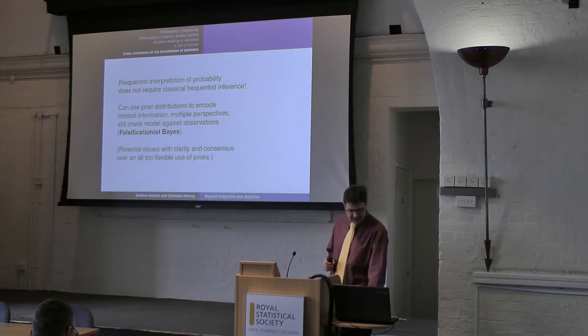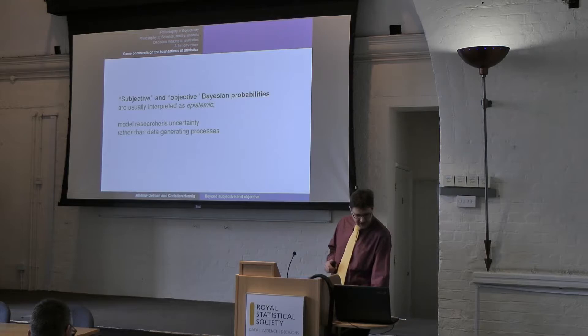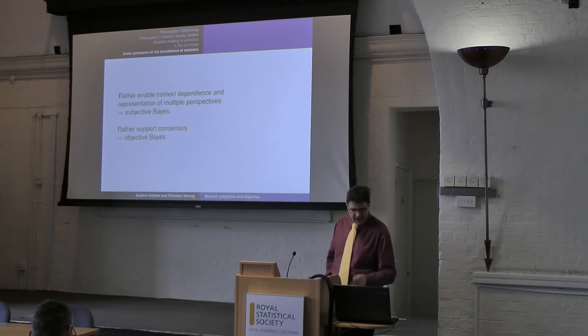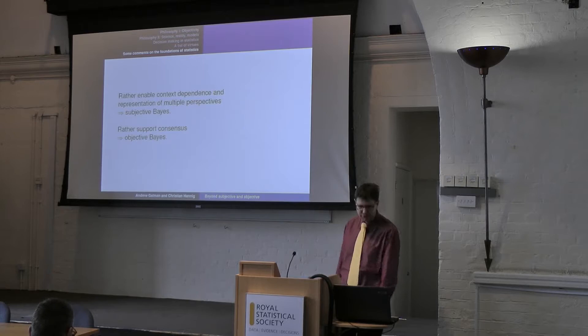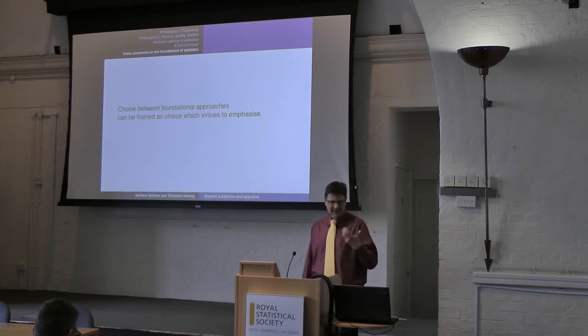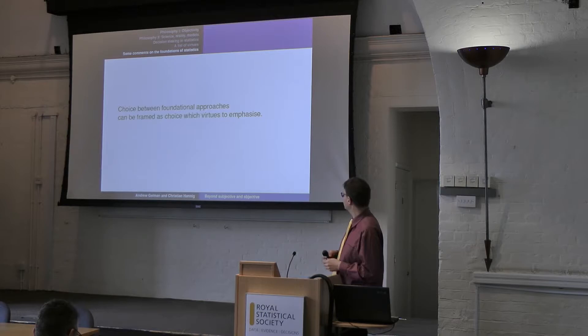One potential issue could be all too flexible use of priors — clarity and consensus. Subjective and objective Bayesian probabilities are usually interpreted as epistemic, so they model the researcher's uncertainty. These models happen in a different place, and the data only modify them. If we want to enable context dependence and representation of multiple perspectives, this points to a subjective approach. If we rather want to support consensus, it points to what is called objective Bayes. In any case, the point is that the choice between foundational approaches can be framed as a choice of which virtues to emphasize.